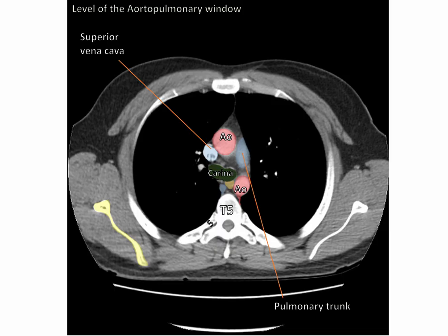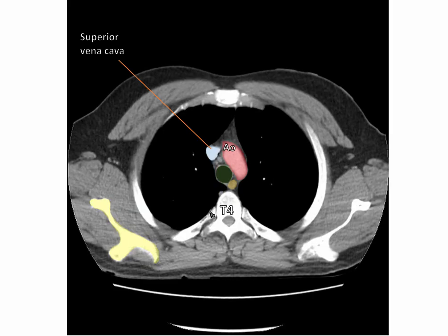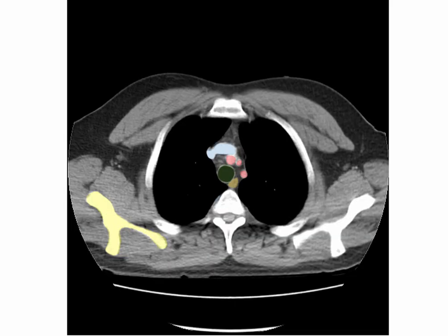This is also approximately at the level of the angle of Louis, or sternal angle. This level is significant as it marks the limits of the aortic arch. As we move superiorly, we can see the two profiles of the aorta joining to form a single profile at the aortic arch level. Also at this level, we can see the azygous vein joining the superior vena cava here. As we move upwards, we can see the vessels emanating from the arch of the aorta and also from the superior vena cava. Here we can see the formation of the superior vena cava from the right and left brachiocephalic veins. Branching from the aortic arch, we can see the brachiocephalic trunk, the left common carotid artery, and the left subclavian artery.